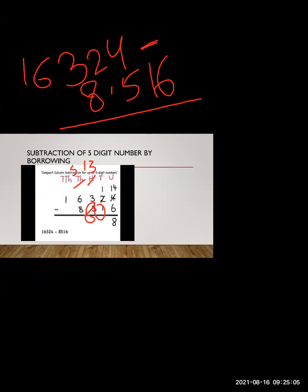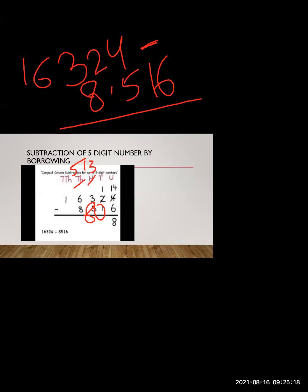Moving further, in the thousands place we have 5 minus 8. Since 5 is smaller than 8, we cannot subtract. So we borrow from the next digit: 5 becomes 15, and the next digit becomes 0. Now, 15 minus 8 equals 7.